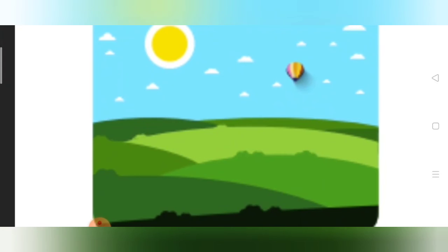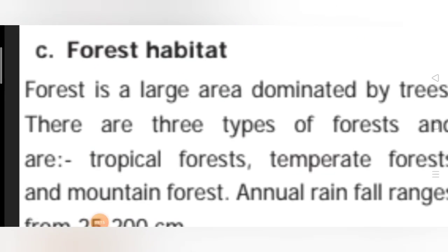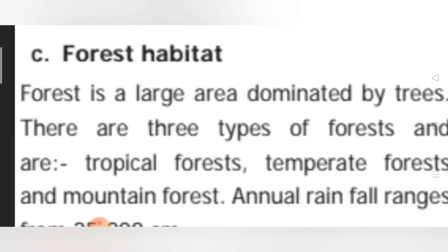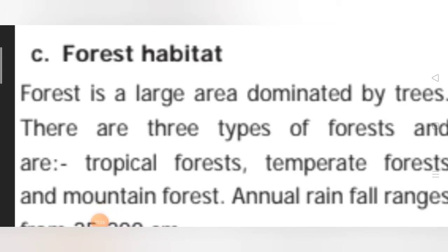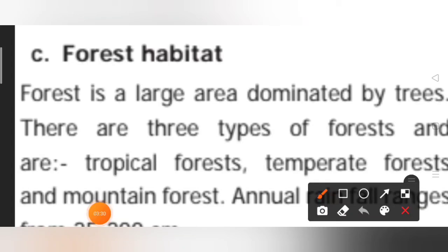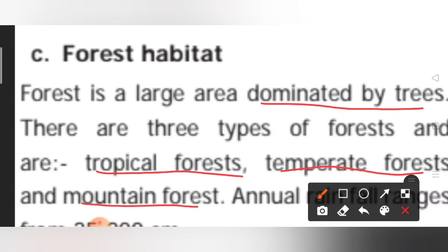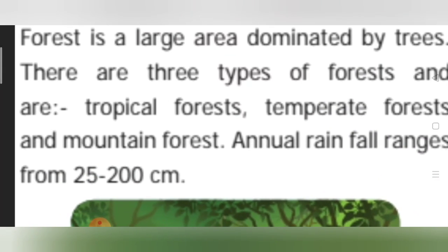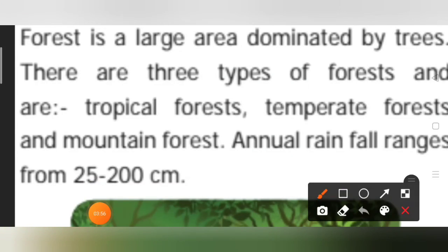Here is a diagrammatic representation of a grassland habitat. Now, forest habitat — a forest is a large area dominated by trees. There are three types of forest: tropical forest, temperate forest, and mountain forest. Rainfall ranges from 25 to 200 centimetres.